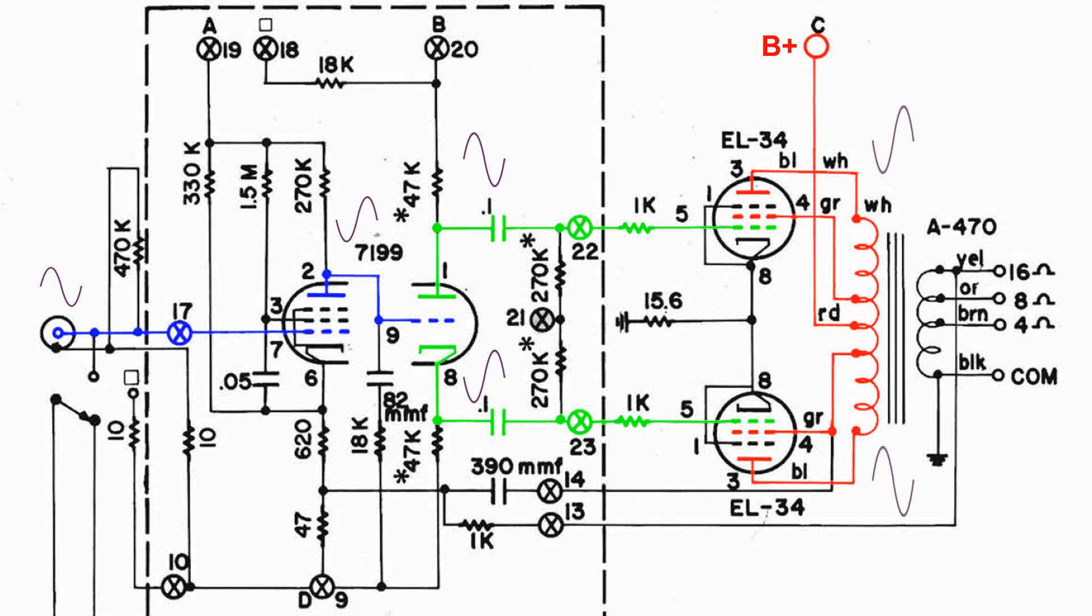These two signals at the control grids of the EL34s are amplified and they are 180 degrees out of phase on the transformer, and this is where the push-pull gets its name. When one tube is going positive, the other tube is going negative and vice versa. So each tube is pushing and pulling that signal on the audio output transformer.